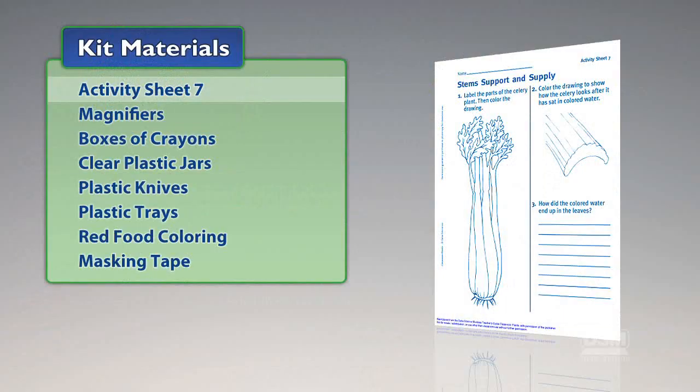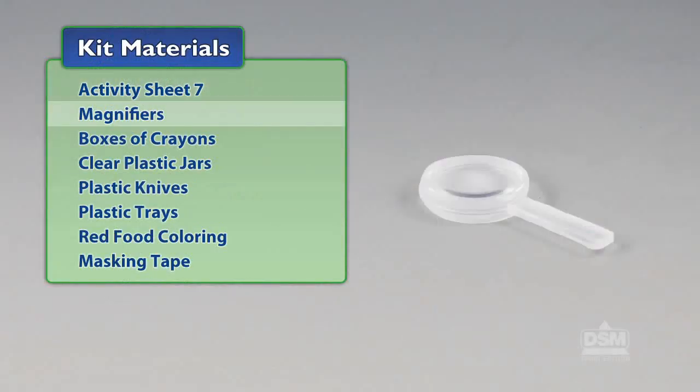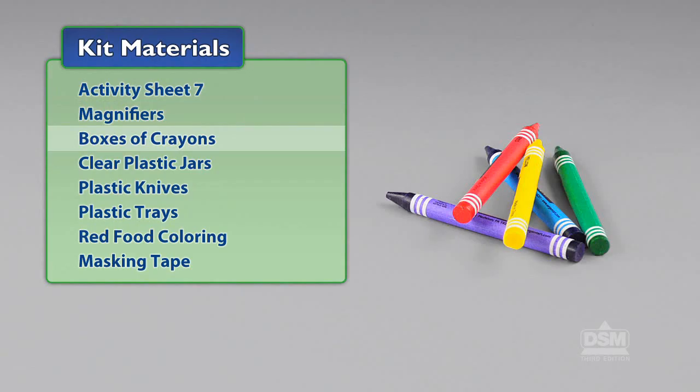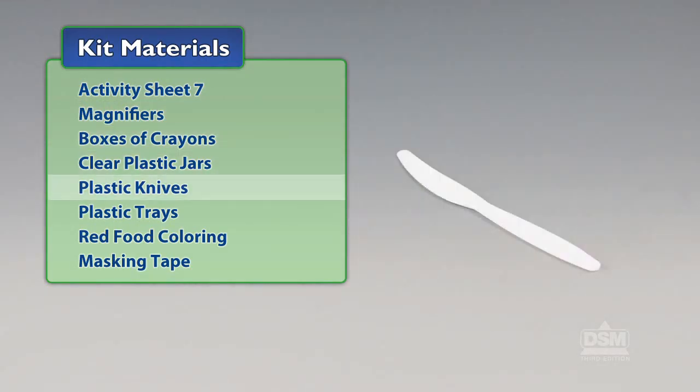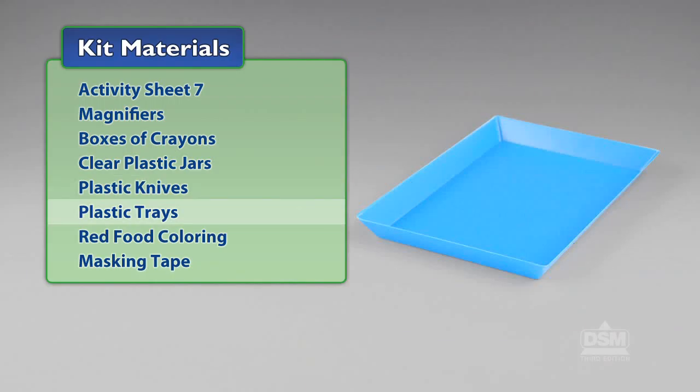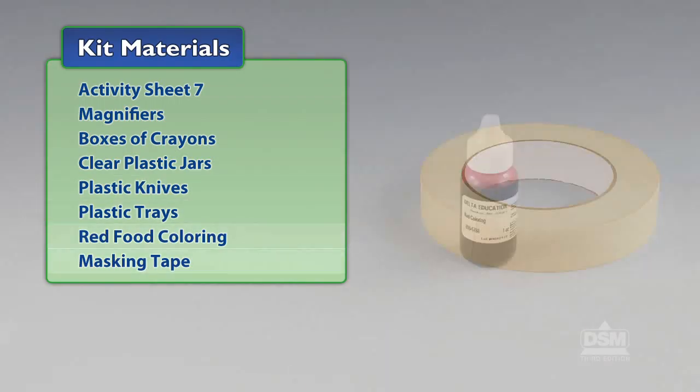You will need the following materials from the kit: Activity Sheet 7, Magnifiers, Boxes of Crayons, Clear Plastic Jars, Plastic Knives, Plastic Trays, Red Food Coloring, and Masking Tape.